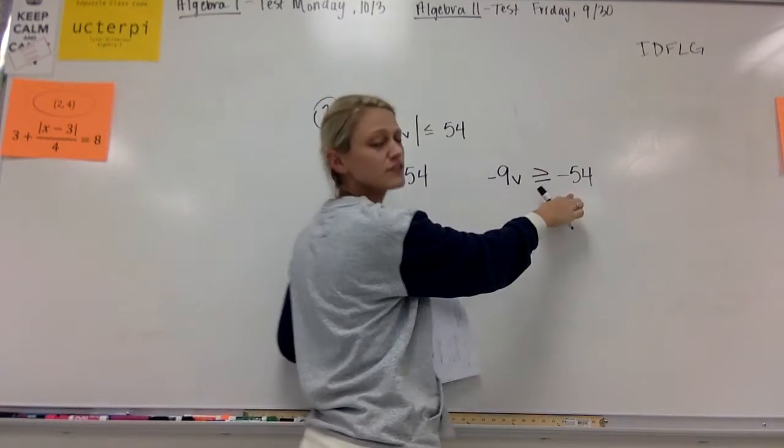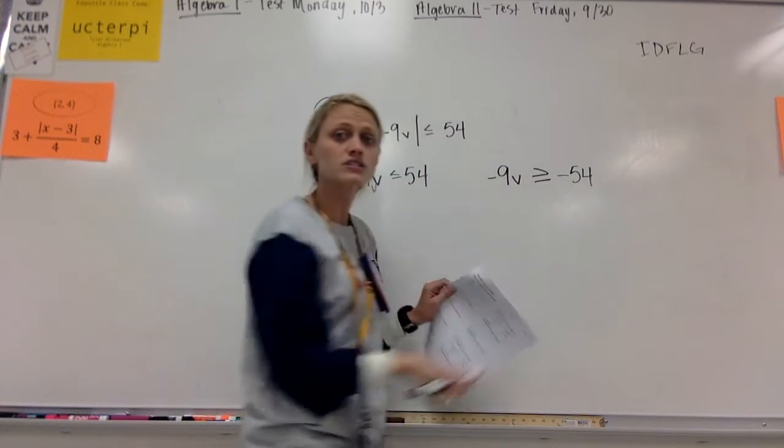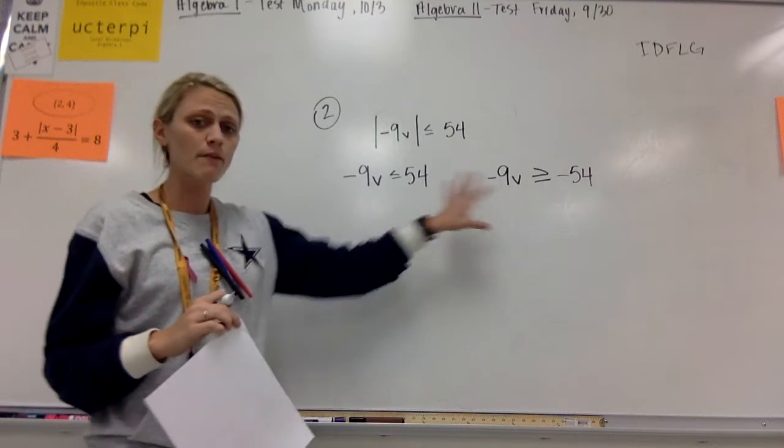So it'll be greater than or equal to. So two things are happening: 54 is becoming negative, and our symbol is flipping around. So now I've got my two inequalities.